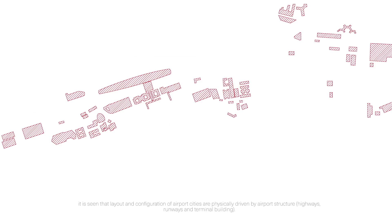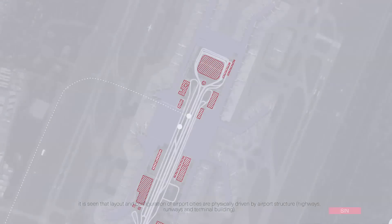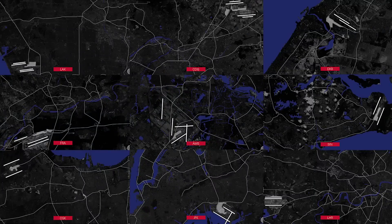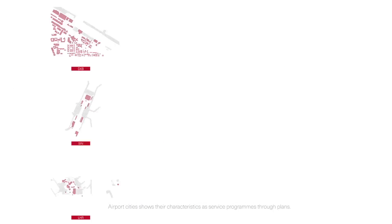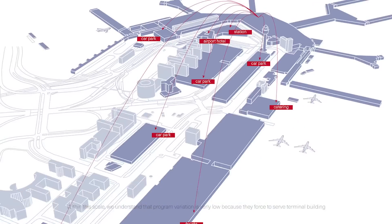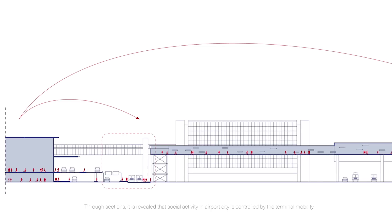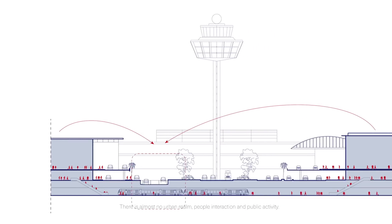Through maps, it is seen that the layout and configuration of airport cities is basically driven by airport structure — highways, runways, and terminal building. Airport city shows its characteristic as a service program through plans. Within this scale, we understand that program variation is very low because they're forced to serve the terminal building. Through section, it is revealed that social activity in airport city is controlled by terminal mobility — no urban dwell, people interaction, and public activity.